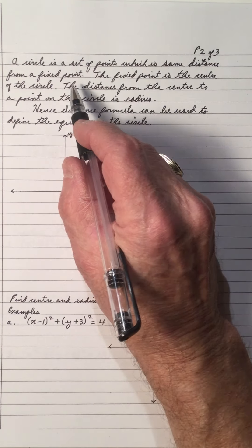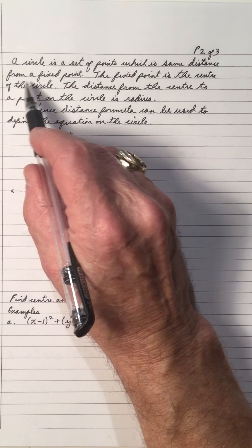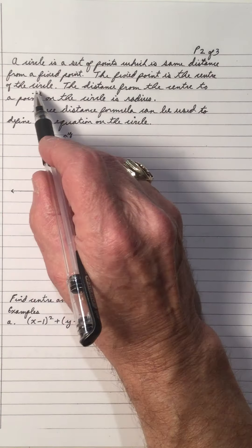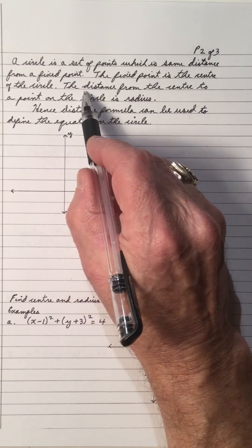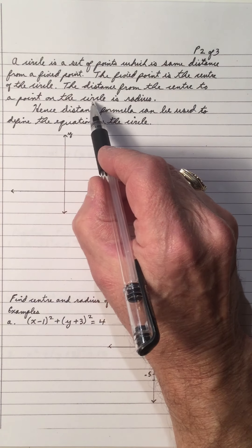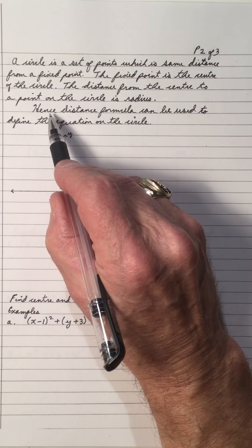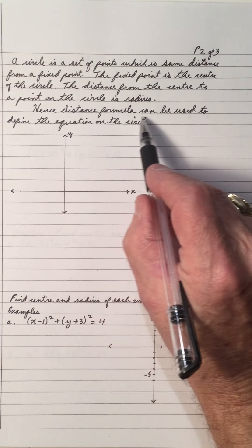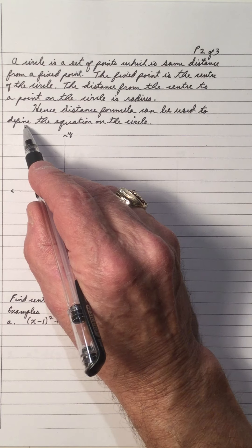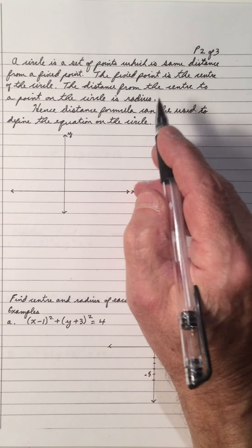A circle is a set of points which is the same distance from a fixed point. The fixed point is the center of the circle, and the distance from the center to the point on the circle is the radius. Hence, the distance formula can be used to describe or define the equation of a circle.